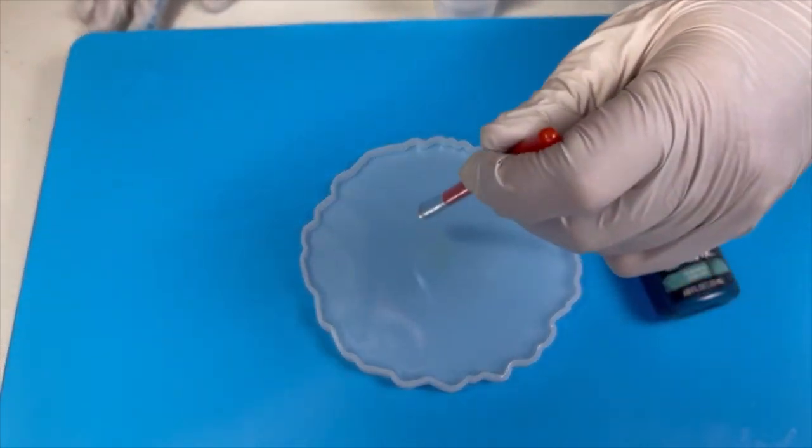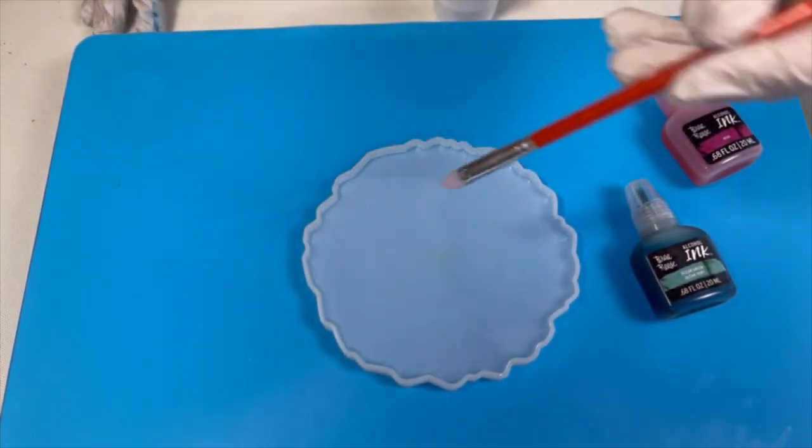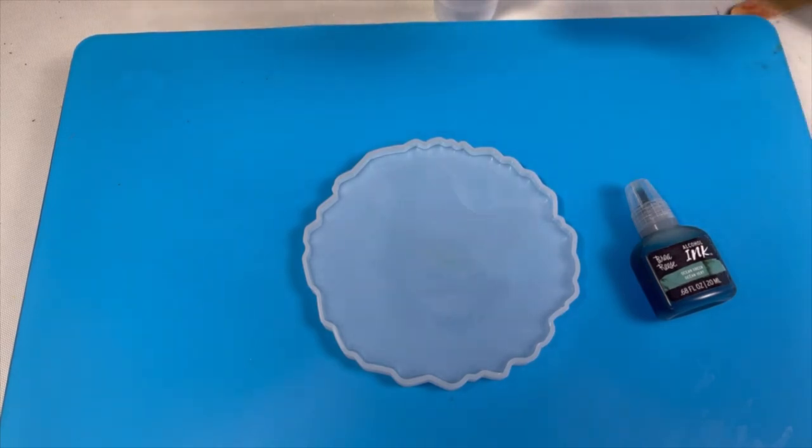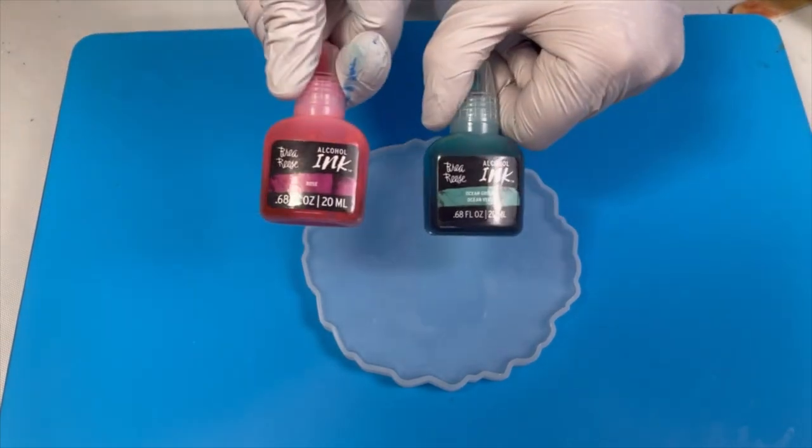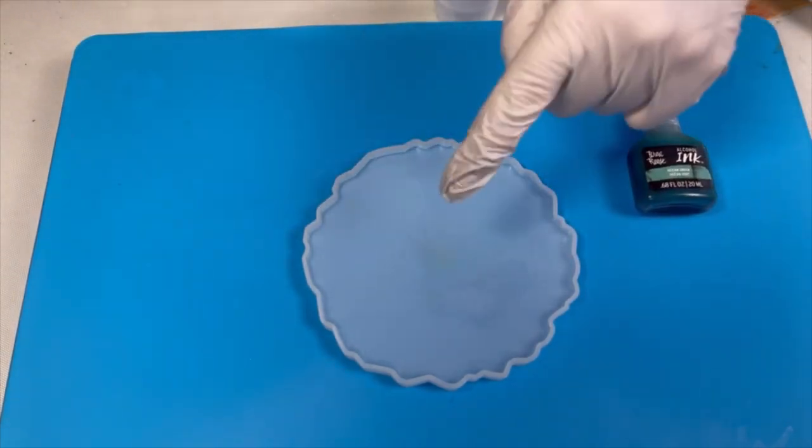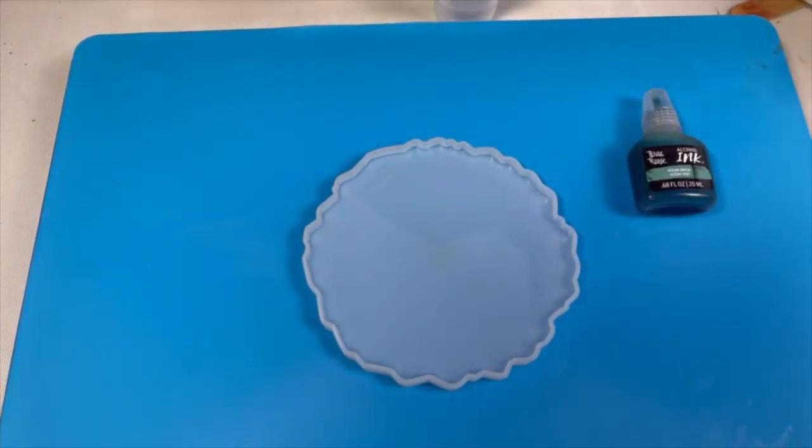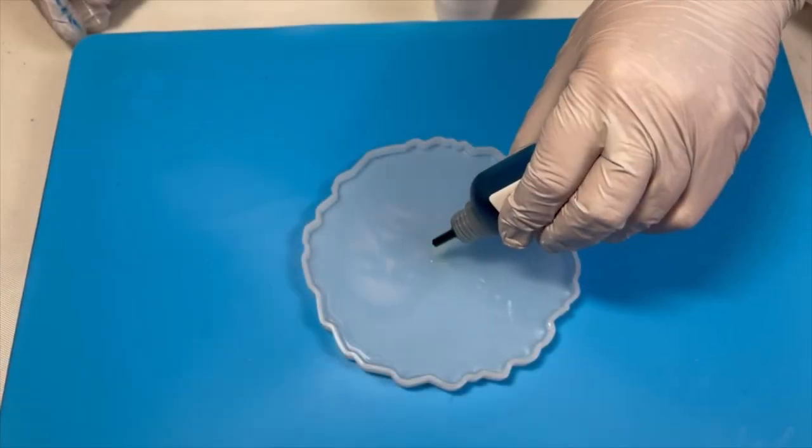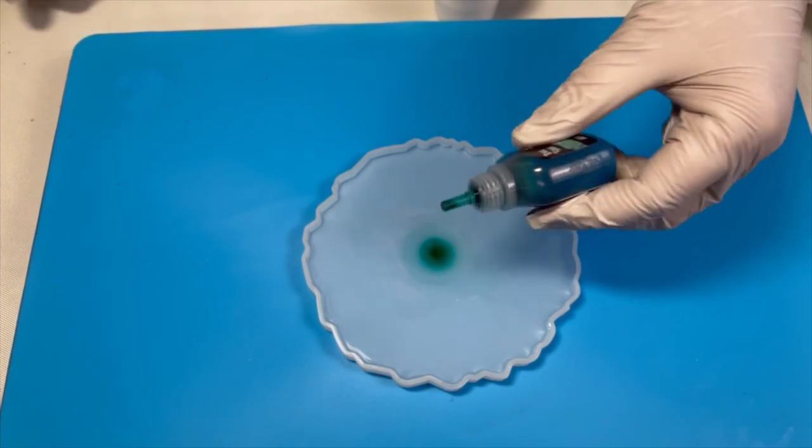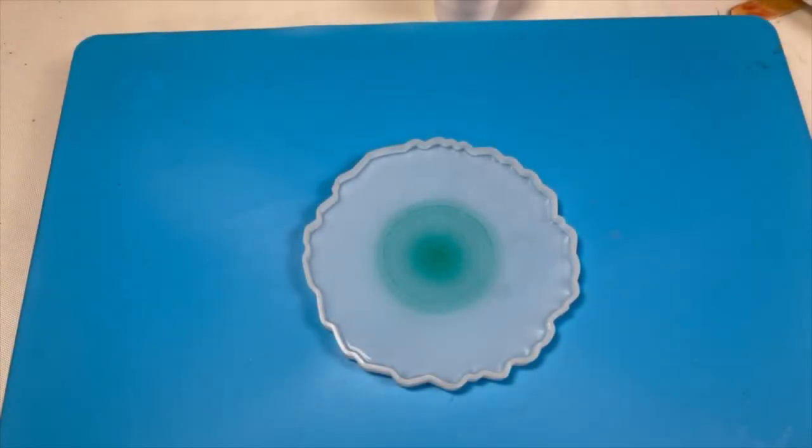Okay, I think I've served the eviction notice to everyone. And the inks that I'm going to use today are Brea Reese inks in rose and ocean green. So I'm going to put the ocean green in the center, and the rose around the outside. Let me just torch this quickly before the rose around the edges.